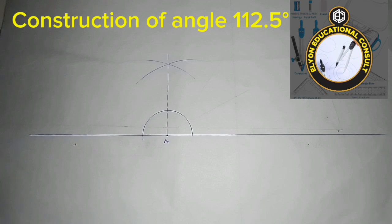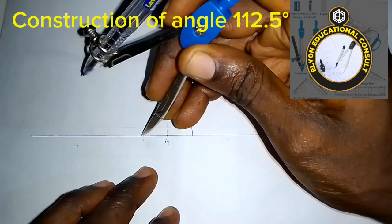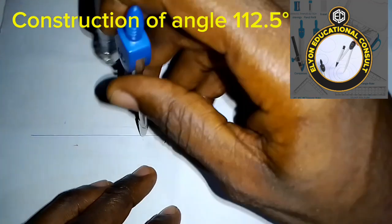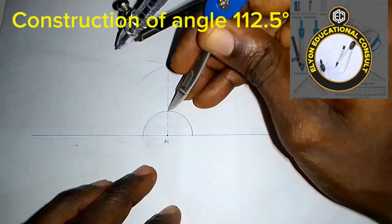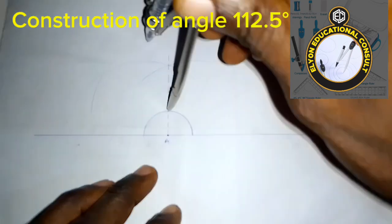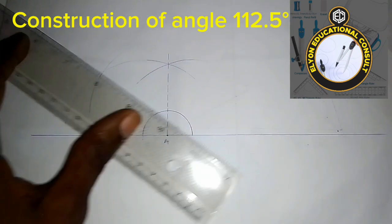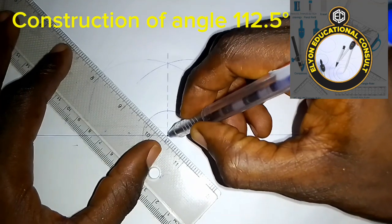If I bisect this side, I'm going to have 45 degrees. So I'm going to be joining them.